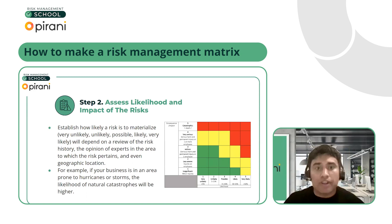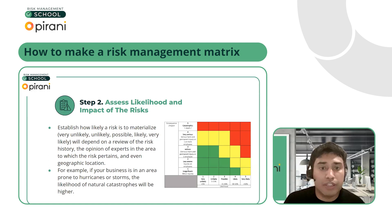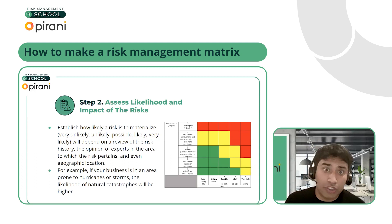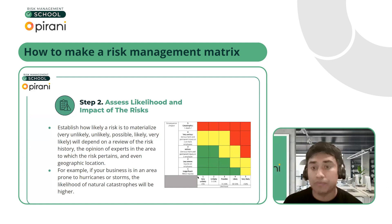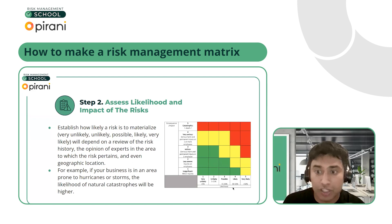Step two is addressing the likelihood and impact of these risks. The typical standard is creating a five-by-five grid, though three-by-threes are also common. It's going to depend on your organization and how your team wants to move forward. In the standard five-by-five, we have impact on one end and likelihood on the other. They can be interchangeable. What's most important is understanding your categorization within each of those lines.